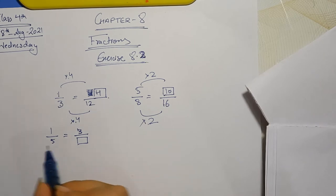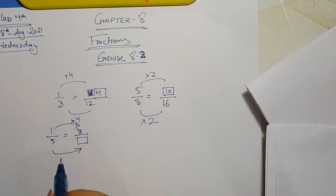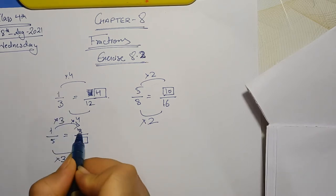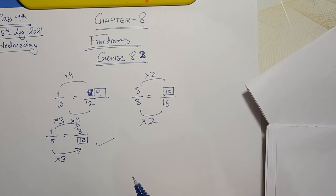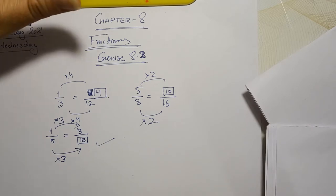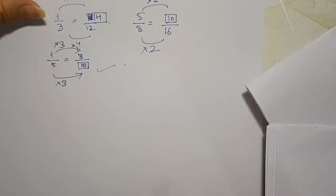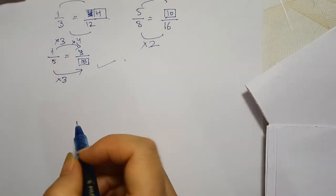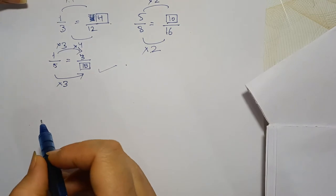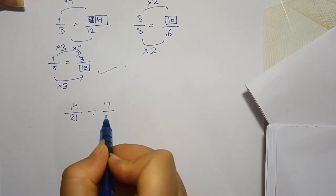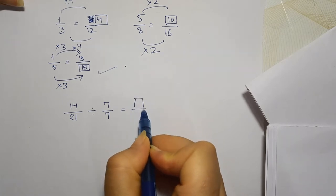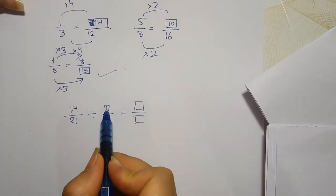Yeh matlab hai ki aapko numerator aur denominator dono ko 3 ke saath multiply karna hai. 3 ones are 3, 5 threes are 15. Is tarah se aap equivalent fractions banayenge. Aapko 8 questions hain. Fill in the blanks to make equivalent fractions mein bhi aapko blanks fill karne hain. Aapko yaad hoga kal maine aapko bataya tha cross multiplication — aap multiply aur divide dono mein karte ho. Kal multiply wale questions kiye the, aaj divide wale karenge.